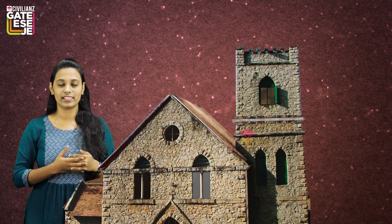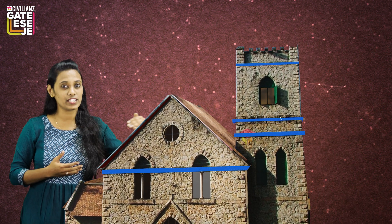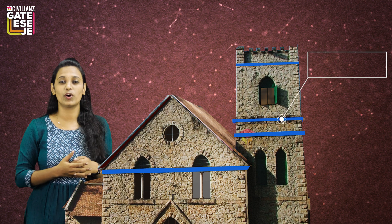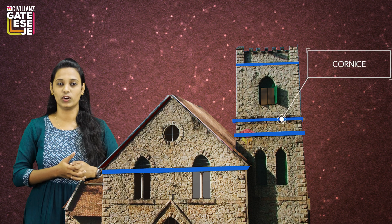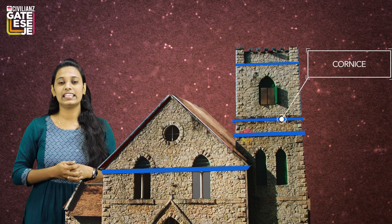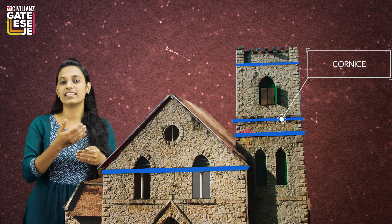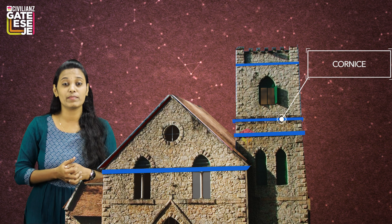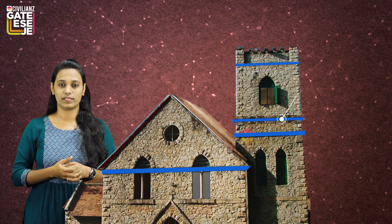Here, we can see that there is a projecting course of stone on the top of the wall. This is termed as cornice. It is molded and given an ornamental treatment.